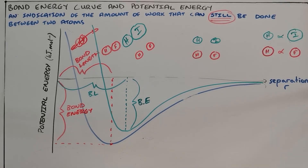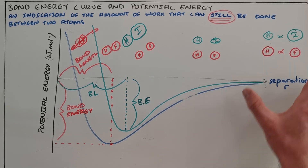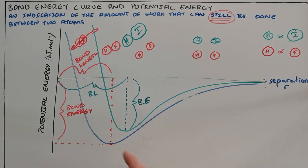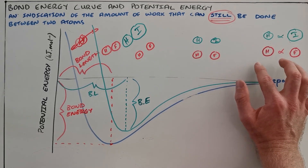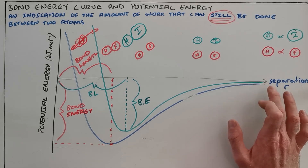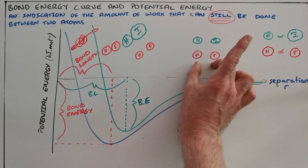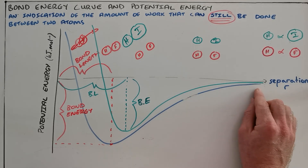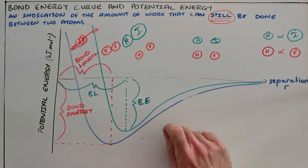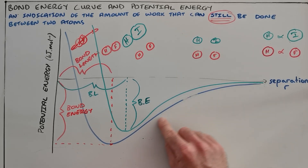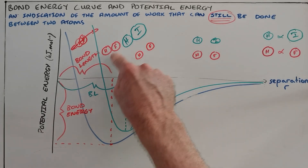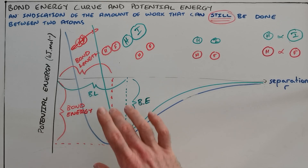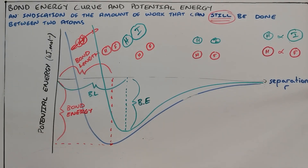The bond energy curve shows the relationship between the separation of two atoms that are going to bond and their potential energy. We read this graph from right to left: starting at an infinite distance apart, the potential energy is very close to zero. As the atoms move closer together, the electrostatic force of attraction pulls them together, and the potential energy decreases because there is less work that can be done. We reach the ideal distance known as the bond length, and the energy at that point is called the bond energy. If the atoms get too close, they are repelled by each other's nuclei and pushed back to a greater separation.